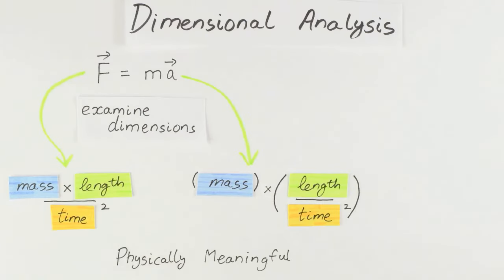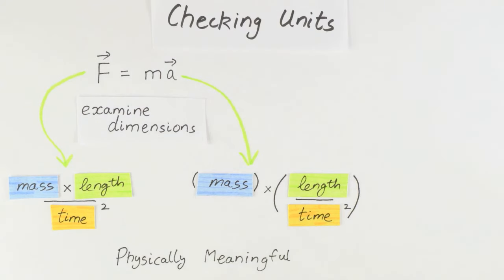Dimensions and units are closely related. For example, the process of checking our units for an equation is similar to doing dimensional analysis on the equation.